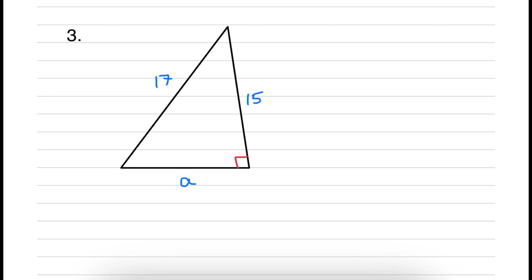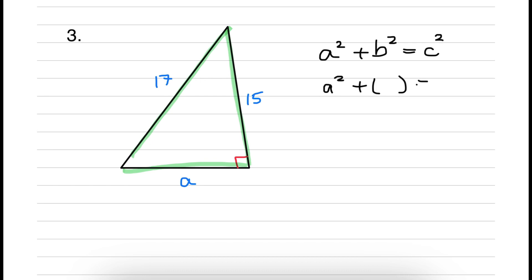Moving on to our third example — this one is a bit different because the side we are trying to calculate is one of the shorter sides. A and 15 are the shorter sides and 17 is the hypotenuse, the long side. Let's write out our formula: A squared plus B squared equal to C squared. I don't have a problem writing it this way because A is what I'm trying to calculate. So we start with A squared, then add 15 squared, equal to 17 squared.